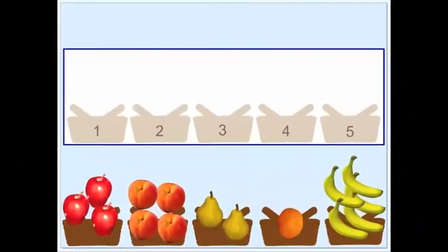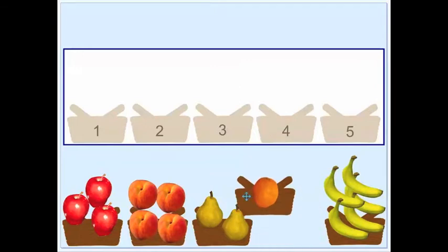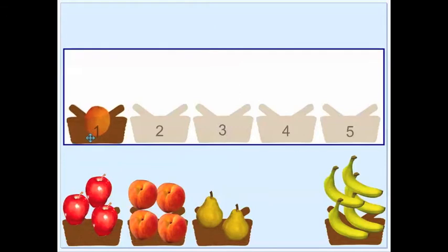Let's put them in order from least to greatest. The orange was the only one of its kind, so we'll put it on the left, where the least number of fruits goes. Next, we'll move the two pears.